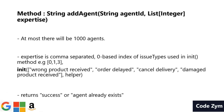The third method is addAgent, which has two parameters: agent ID and a list of expertise as integers. Agent ID will never be blank. For example, an expertise can be like 0, 1, 3. So if the agent expertise is 0, 1, 3, the agent can resolve issues with issue type 0 (wrong product received), order delayed, or damaged product received. However, it cannot solve issues of type 2, which is cancelled delivery. This method will return either 'success' or 'agent already exists' if an agent with the given agent ID already exists.